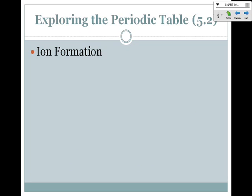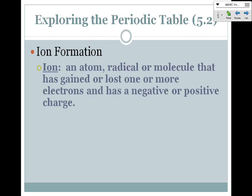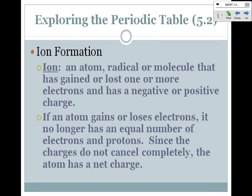Now, ion formation. Everything we've looked at on the periodic table so far, each element has no charge. It's perfectly balanced. For instance, carbon has six protons and six electrons, so their charges cancel each other out, giving it a net charge of zero. An ion is an atom, radical, or molecule that has either gained an electron or lost an electron. If they gain electrons, they become more negative. If they lose electrons, they become more positive. If an atom gains or loses an electron, it no longer has that equal number of electrons and protons, then the charges don't cancel out, so the atom or element has a net charge.